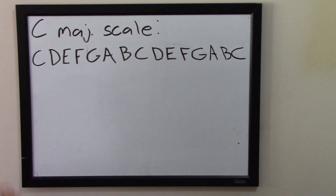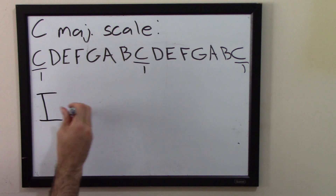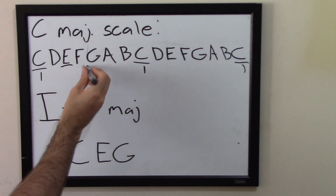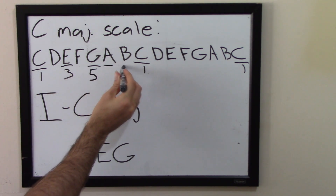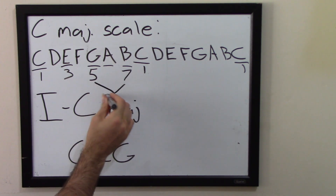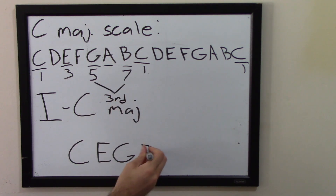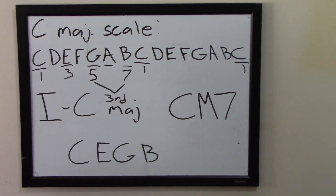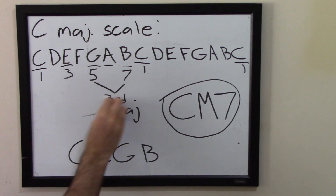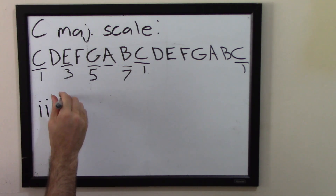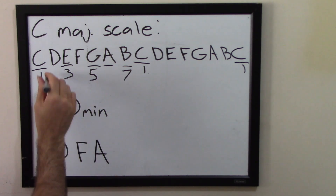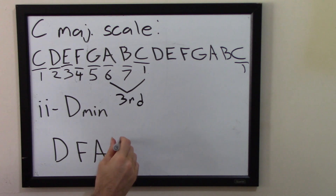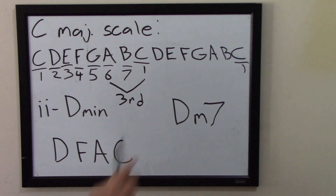Every scale also has 7 seventh chords that naturally occur inside of it. Sticking with C major, we started on C and had the triad C, E, G. If we add another third to the top — a 7th — that would be G, A, B, so we add a B. C, E, G, and B — that is the C major 7th chord. We can do the same with D. We already had D, F, and A. On top of that A, we add the 7th, which is C. So D, F, A, and C — that is a D minor 7th chord.